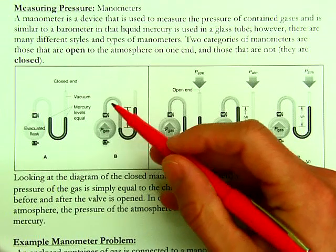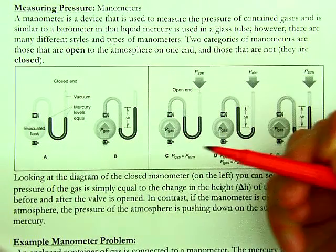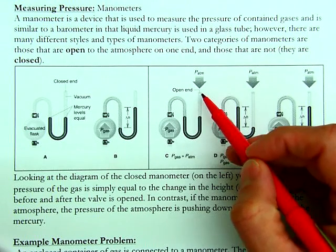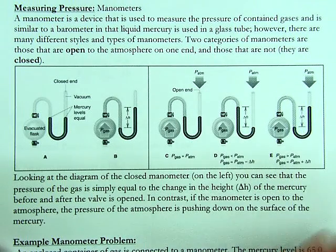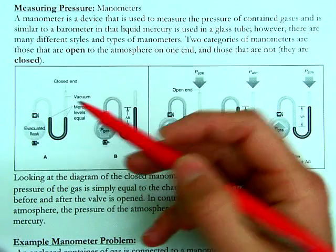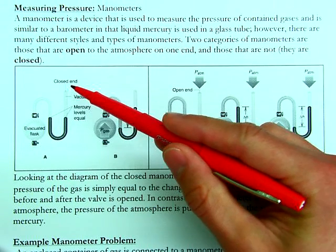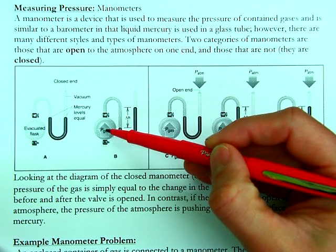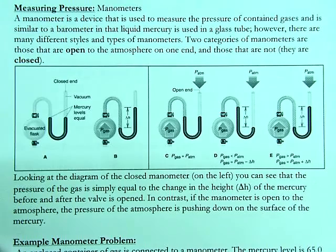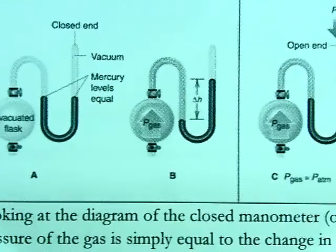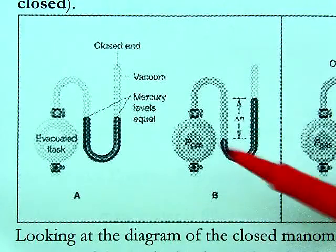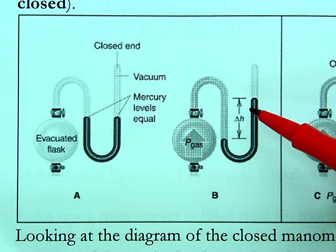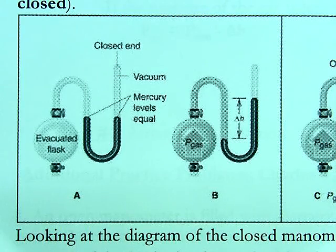A manometer is a device where you have a sample of gas connected to a tube containing mercury. We have both open-end manometers, where one end is open to the atmosphere, and closed manometers, where one end of the tube is closed. In a closed-end manometer, when you open the valve of the container that has the gas in it, the change in the height of the mercury — delta H — is the pressure of the gas. So in a closed manometer, P_gas equals delta H in mmHg.